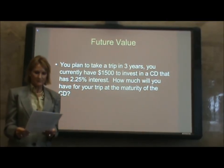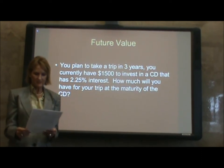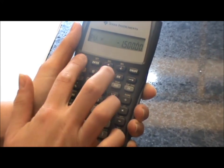Let's take an example. You plan to take a trip in 3 years. You currently have $1,500 to invest in a CD that has 2.25% interest. How much will you have for your trip at the maturity of the CD? To find this on the calculator, you will enter 3 N, 2.25 I over Y, 0 PMT, 1500 plus or minus PV, CPT, FV. That will get you a future value of $1,603.55.